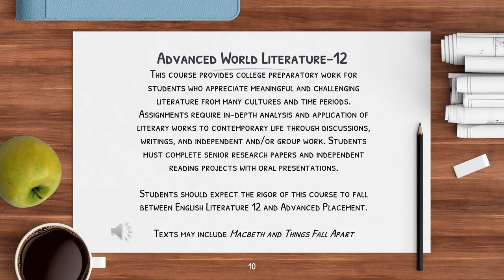Advanced World Literature, Grade 12: This course provides college preparatory work for students who appreciate meaningful and challenging literature from many cultures and time periods. Assignments require in-depth analysis and application of literary works to contemporary life through discussions, writing, and independent and/or group work. Students must complete senior research papers and independent reading projects with oral presentations. Students should expect the rigor of this course to fall between that of English Literature 12 and Advanced Placement. Texts include Macbeth and Things Fall Apart.